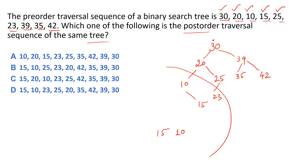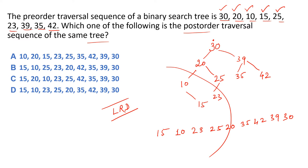Post-order traversal ka result: 15 pehle print hoga, next 10, next 23, next 25, next 20. Post-order traversal LRD kehlata hai. Next 35, next 42, phir 39 aur 30. Is se option D match karta hai: 23, 25, 20, 35, 42, 39 — so D option is the correct option.